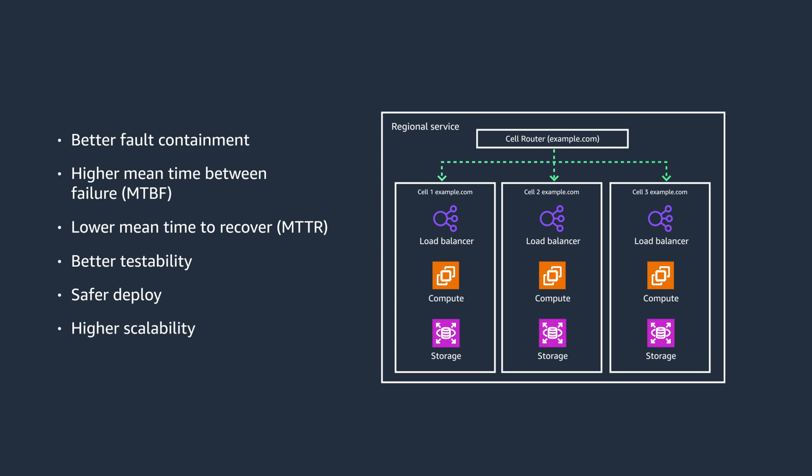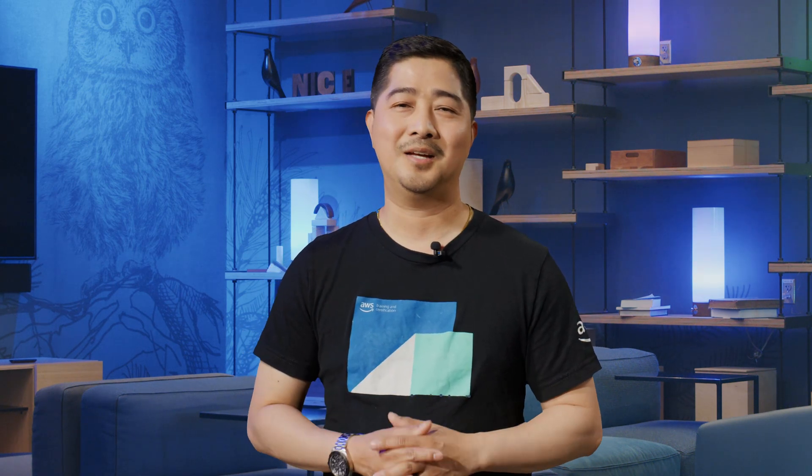Cell-based architectures also increase application scalability by adding cells as needed. When working with cell-based architectures, it is important to understand your application and business needs — your architecture will change over the lifetime of your application as your requirements change. Cell-based architectures can improve fault isolation and resiliency for your applications. Check out additional resources in the description below. Thanks for watching Back to Basics — see you next time.